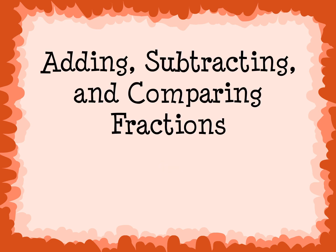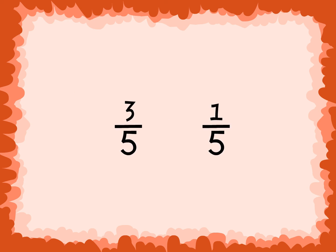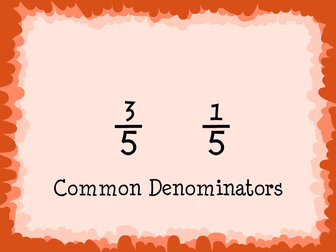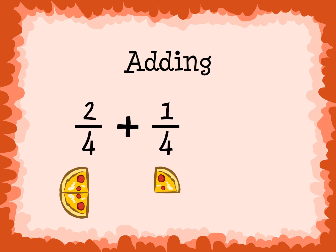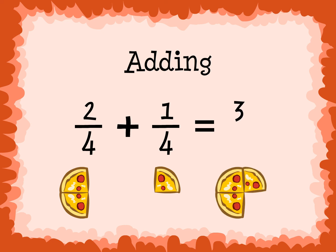Adding, subtracting, and comparing fractions. If the denominators are the same, or common denominators, we can easily add, subtract, or compare fractions. Adding: 2 fourths plus 1 fourth. The denominators are both 4, so we simply add 2 plus 1, which equals 3. We place the 3 over the common denominator 4, and get 3 over 4, or 3 fourths. So 2 fourths plus 1 fourth equals 3 fourths.